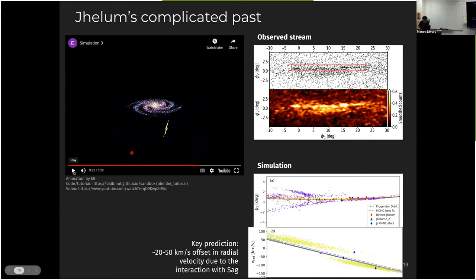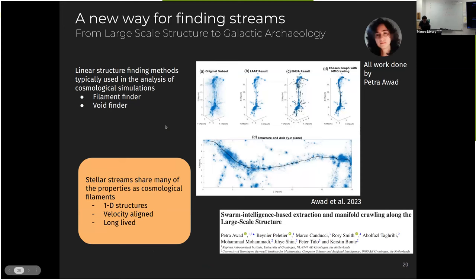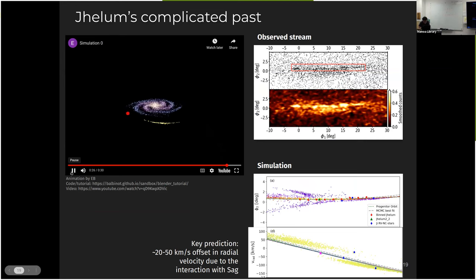And after the closest approach, you can see that Jhelum starts to have some funky features that are off the stream. So this is basically the stream folded on itself due to the interaction of Sagittarius. That's a 2 kpc roughly approach. Oops, sorry.